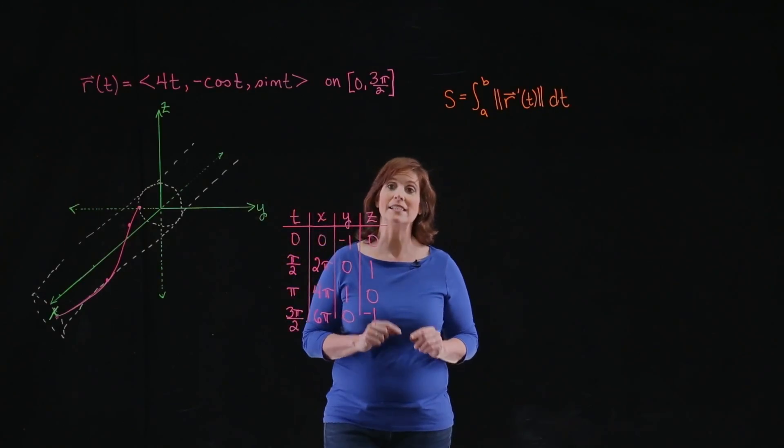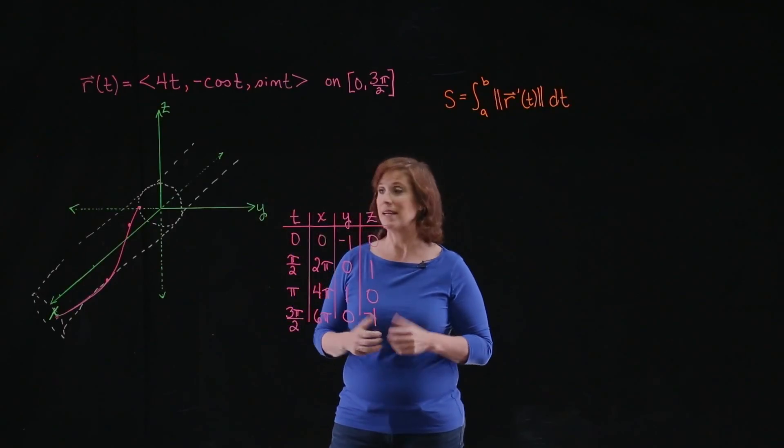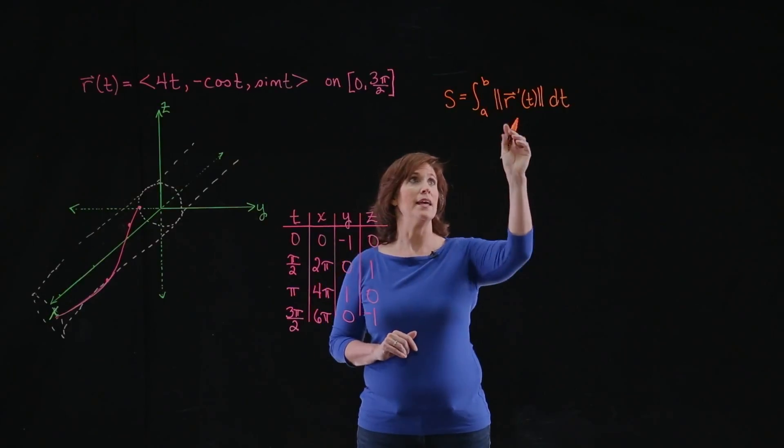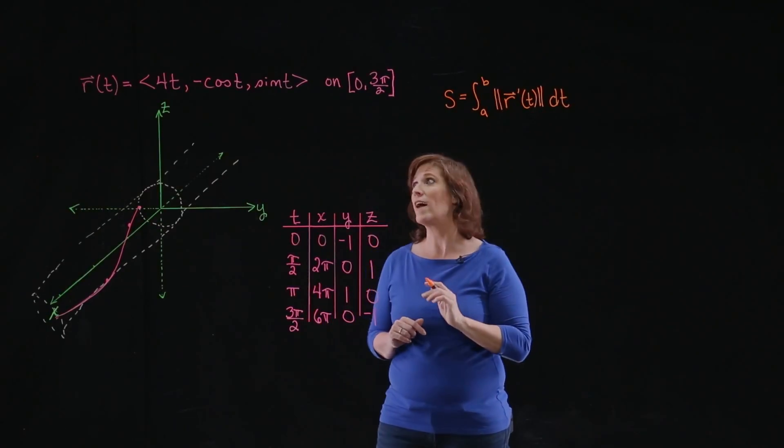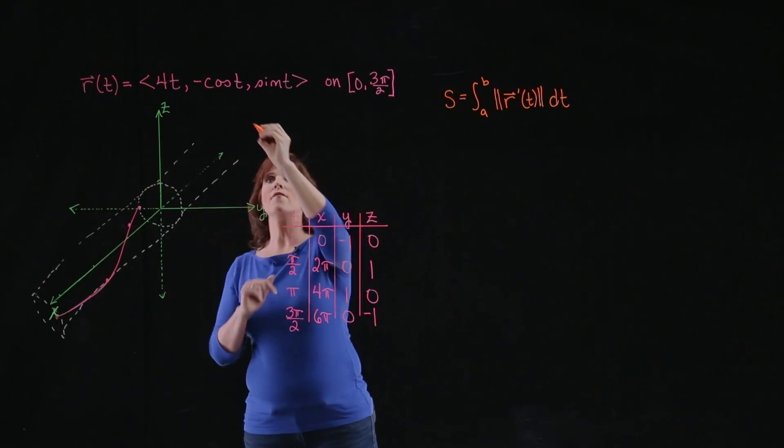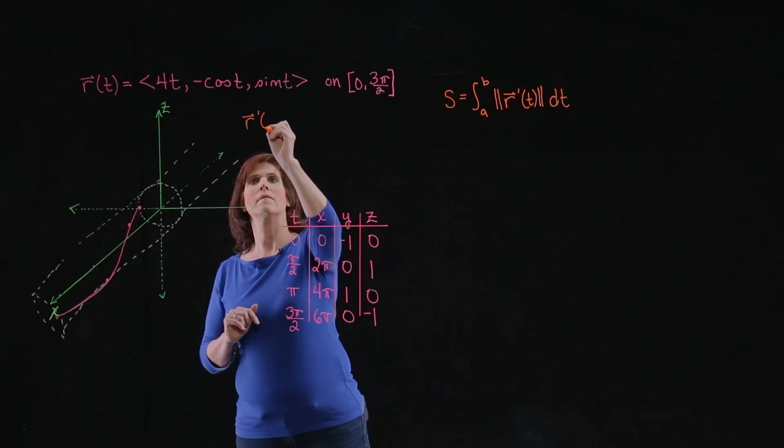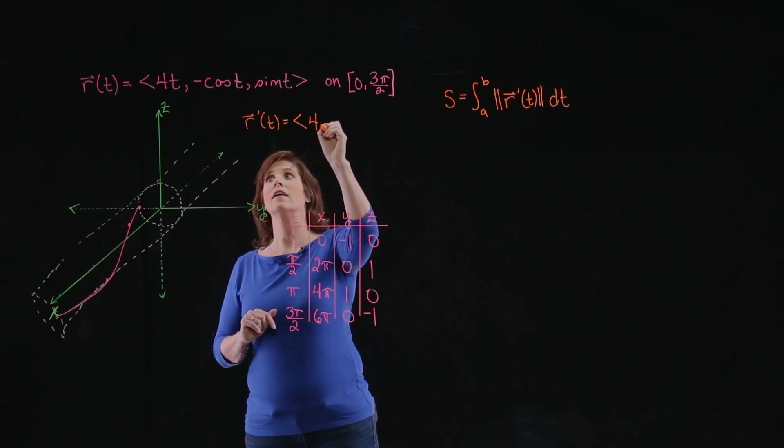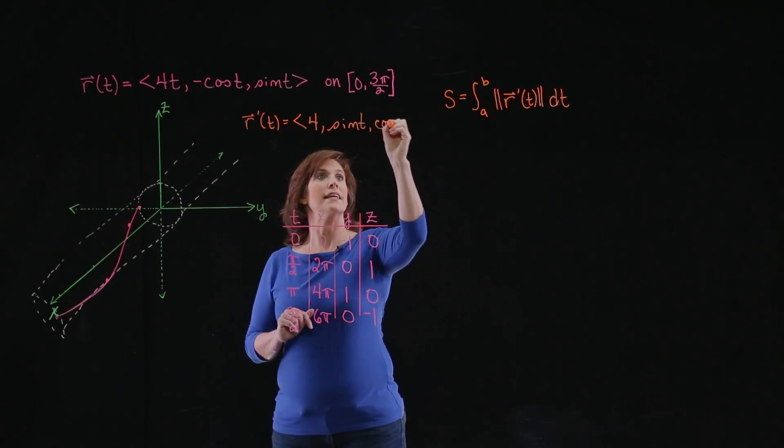That's a rough idea of the curve. The next thing we want to find is the arc length. What is the length of that curve going around my cylinder? In order to do that, we need to find the integral from a to b of the norm of r-prime. So let's take a minute and find r-prime. r-prime is going to be <4, sin(t), cos(t)>.